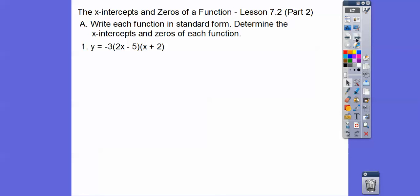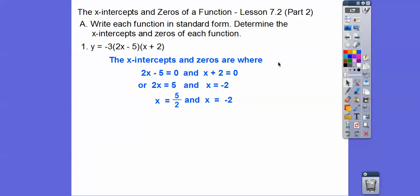Let's try it with this one. Here we're going to set this equal to zero. 2x - 5 = 0 and x + 2 = 0. So when we go +5, +5, we get 2x = 5 or x = 5/2, and then here we get x = -2.